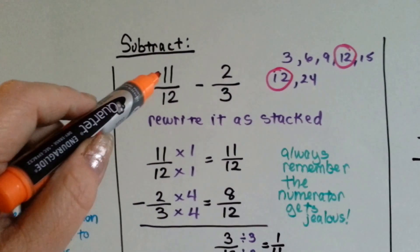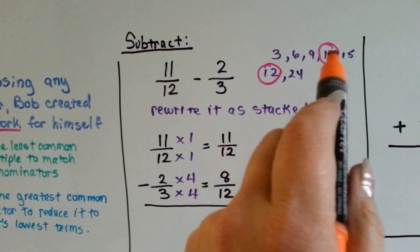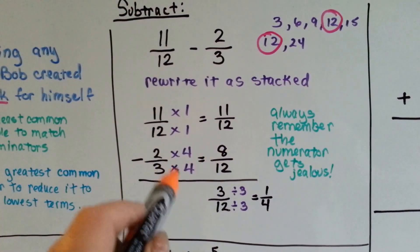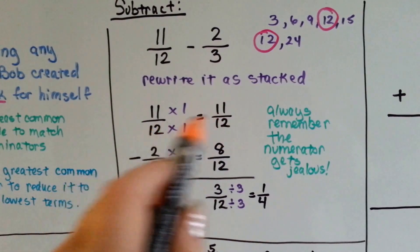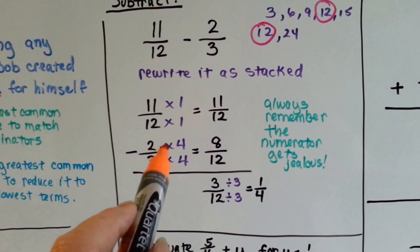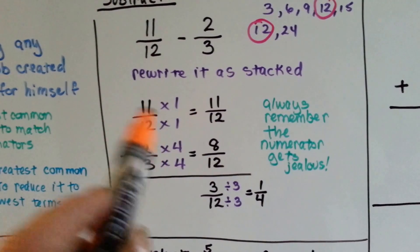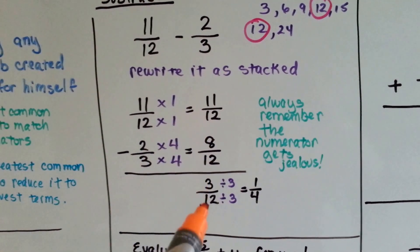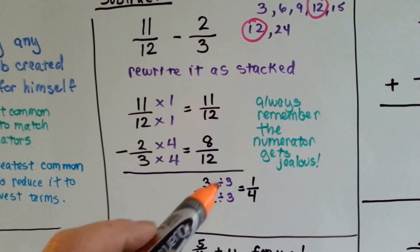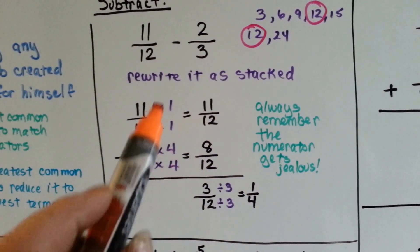To subtract 11/12 minus 2/3, we're going to list the common multiples and choose the littlest one, which is 12, so they can both meet at 12's house. Then we're going to rewrite it as stacked. 12 is already home, multiplied by 1, so 11 stays the same. But 3 needs to be multiplied by 4 to get to 12's house, and 2 gets jealous, so he gets multiplied by 4 and becomes 8. So now we have 11/12 minus 8/12. 11 minus 8 is 3, we end up with 3/12. We know that the greatest common factor between 3 and 12 is 3, so we divide them both by 3 and get 1/4. So always remember that the numerator gets jealous and wants to be multiplied by the exact same number.